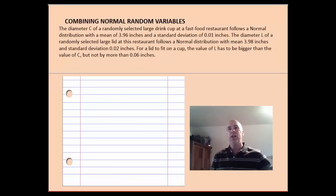One last example. Here's one last example that will tie together everything from this section. We have diameters of randomly selected large drink cups at a fast food restaurant. They follow a normal distribution. We are given the mean number of inches and the standard deviation. We also have lids. The lids also follow normal distribution, but there's some little variability to them. They have a mean of 3.98 inches, and they have a standard deviation as well.